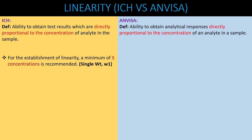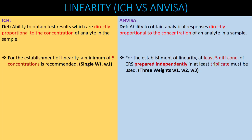Regarding requirements: ICH recommends a minimum of five concentrations, prepared by making a single stock solution and further diluting it to the required concentration levels. ANVISA, however, requires at least five different concentrations of CRS (certified reference standard) prepared independently in at least triplicate. You need to weigh the reference standard in three different weights independently, make stock solutions, and from these three independent stock solutions prepare five different concentration levels.